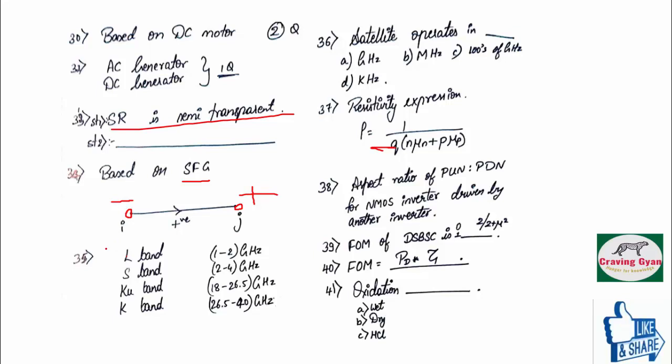And thirty-fifth question was an easy question. You have to write the frequency range of L band, S band, Q band and K band. How to remember is LX CX, Q K car. Like that, you can remember.